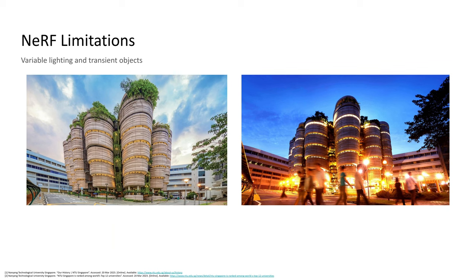Variable lighting and transient objects. Variable lighting is when the lighting of the scene is not consistent across images. This violates one of the assumptions of NeRF. Transient objects are objects that are not static, which means they can change position with respect to the static scene across images. This also violates another assumption of NeRF.